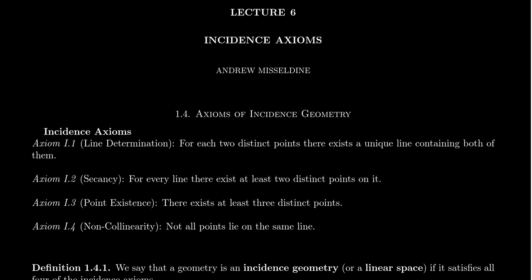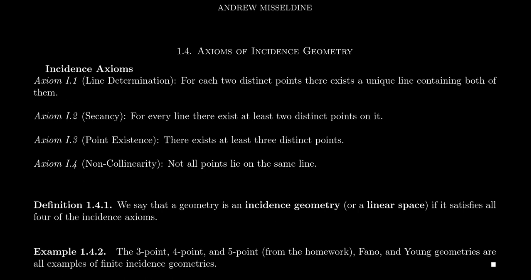Remember, incidence here is the relationship between a point and a line. We say a point is incident to a line — it's an undefined term, but intuitively think of the point as being on the line. These four axioms of incidence are going to be due to David Hilbert. They're part of the Hilbert axioms of Euclidean geometry, which we'll talk about in much more detail in the future.